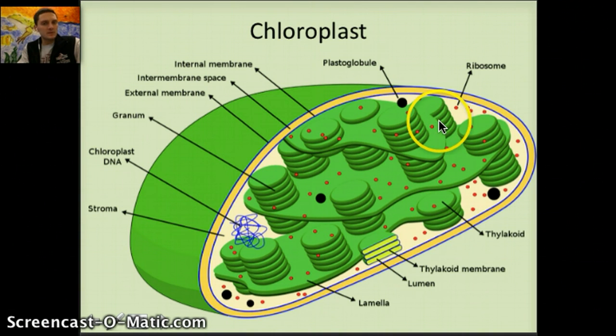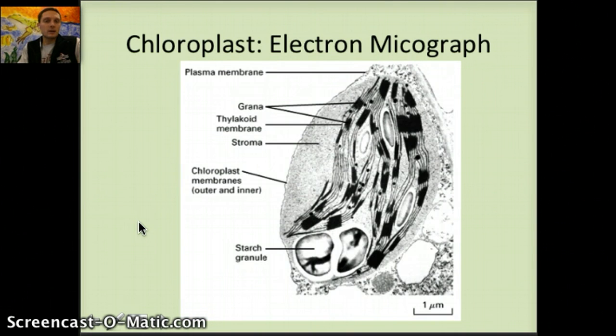We can also see ribosomes present in the chloroplast. Chloroplasts actually do have their own DNA, as do mitochondria. The space, the cytoplasm of the chloroplasts, or the empty space, we call the stroma of the chloroplasts. Here's a nice image just so you can see the different parts very easily. Here's an electron micrograph, which you'll need to be responsible for being able to identify.